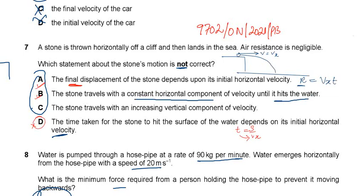If the velocity increases, time decreases — they are inversely related, not directly proportional. So the time taken to hit the water does not depend on the initial horizontal velocity in the way stated. This is incorrect, making D the correct option to select.